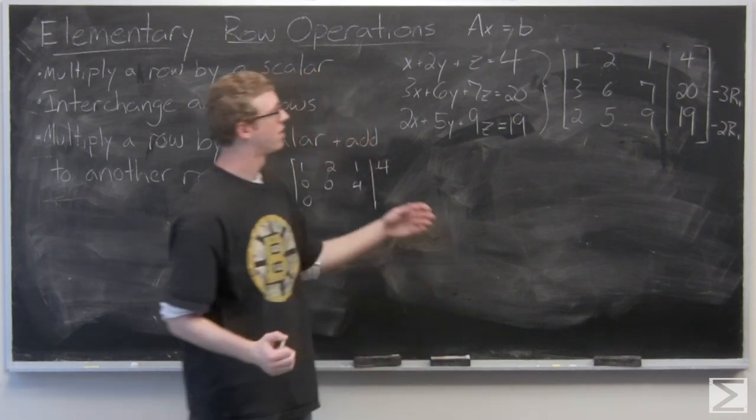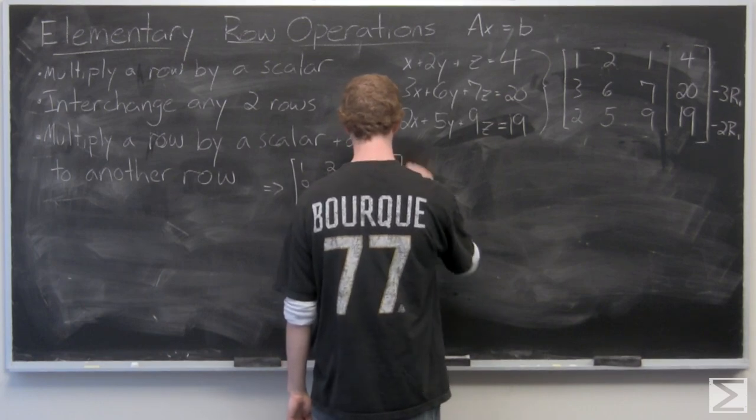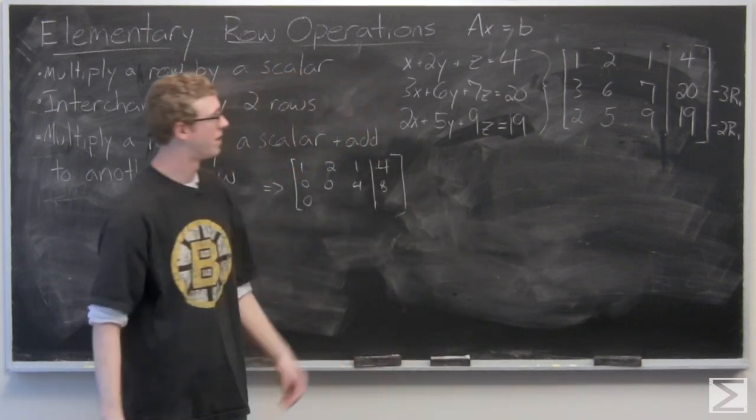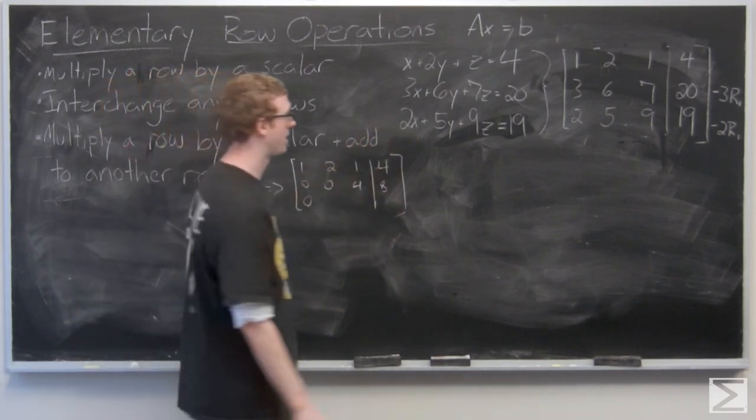3 times 4 is 12, 20 minus that is 8. And then we have 5 minus 4, 9 minus 2, and 19 minus 8.